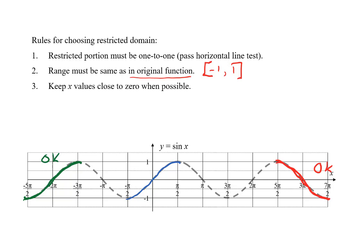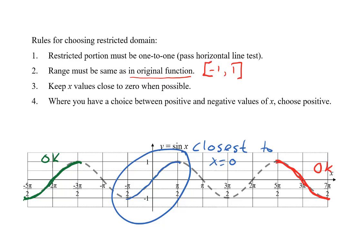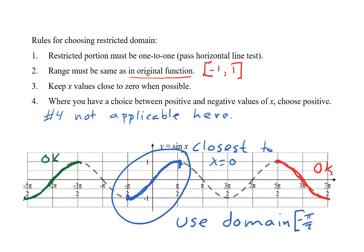The third rule says we should keep the x values close to zero when possible. In this case, we can keep x values fairly close to zero if we use the blue section — that keeps x much closer to zero than the red and the green. The last rule says where you have a choice between positive and negative values of x, choose the positive. That would make the red a better choice than the green, but the blue is the best because of staying close to zero. Following all four rules, we conclude that the restricted domain for the sine function runs from negative pi over two to positive pi over two, using square brackets because we include those endpoints.